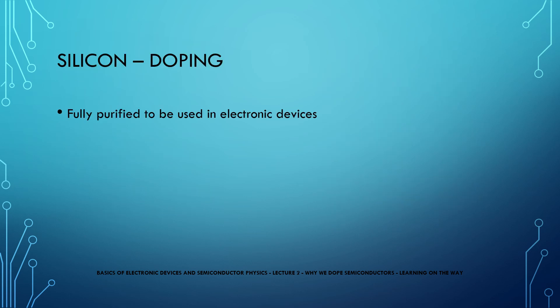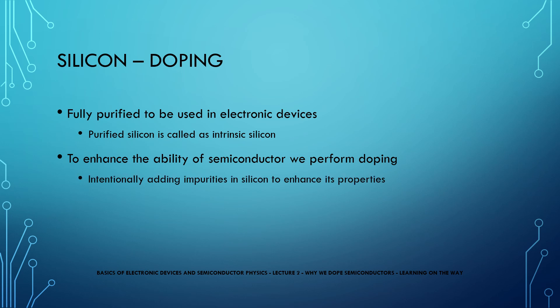This silicon is purified to its maximum to be used in electronic devices. Such a pure silicon material is called intrinsic silicon material. However, to enhance the abilities of this semiconductor, we do a process called doping. Doping is a process in which we intentionally add impurities in silicon to enhance its properties.